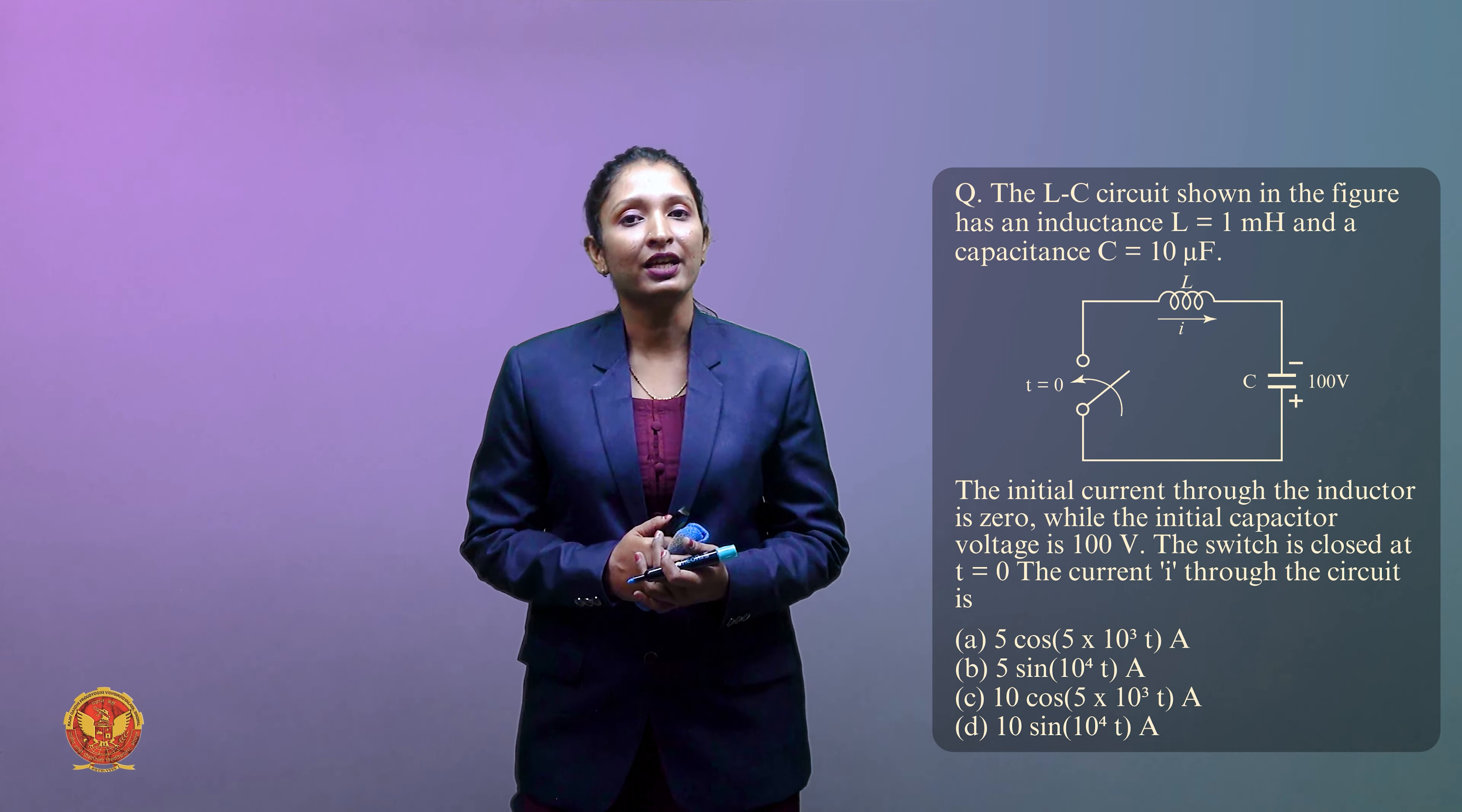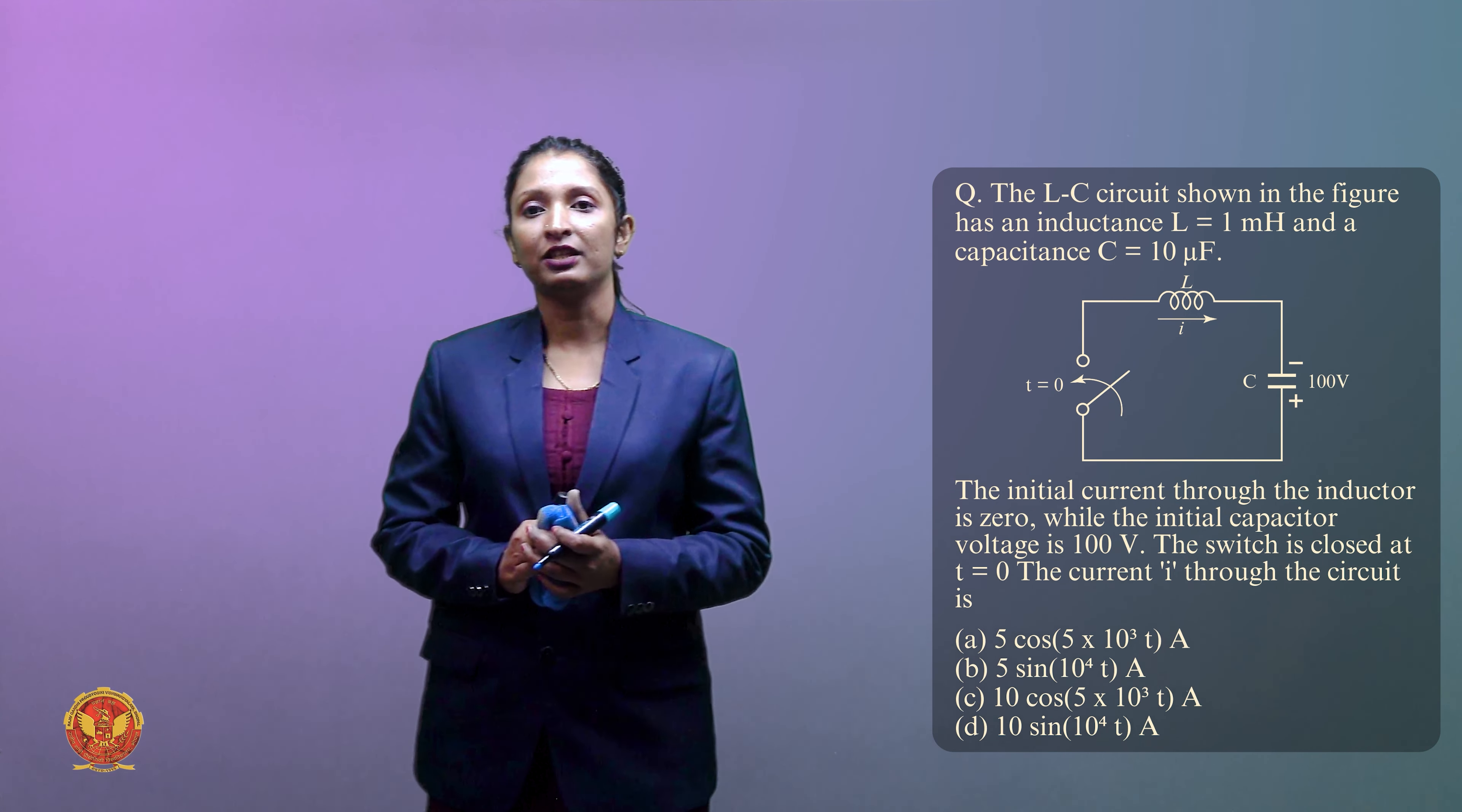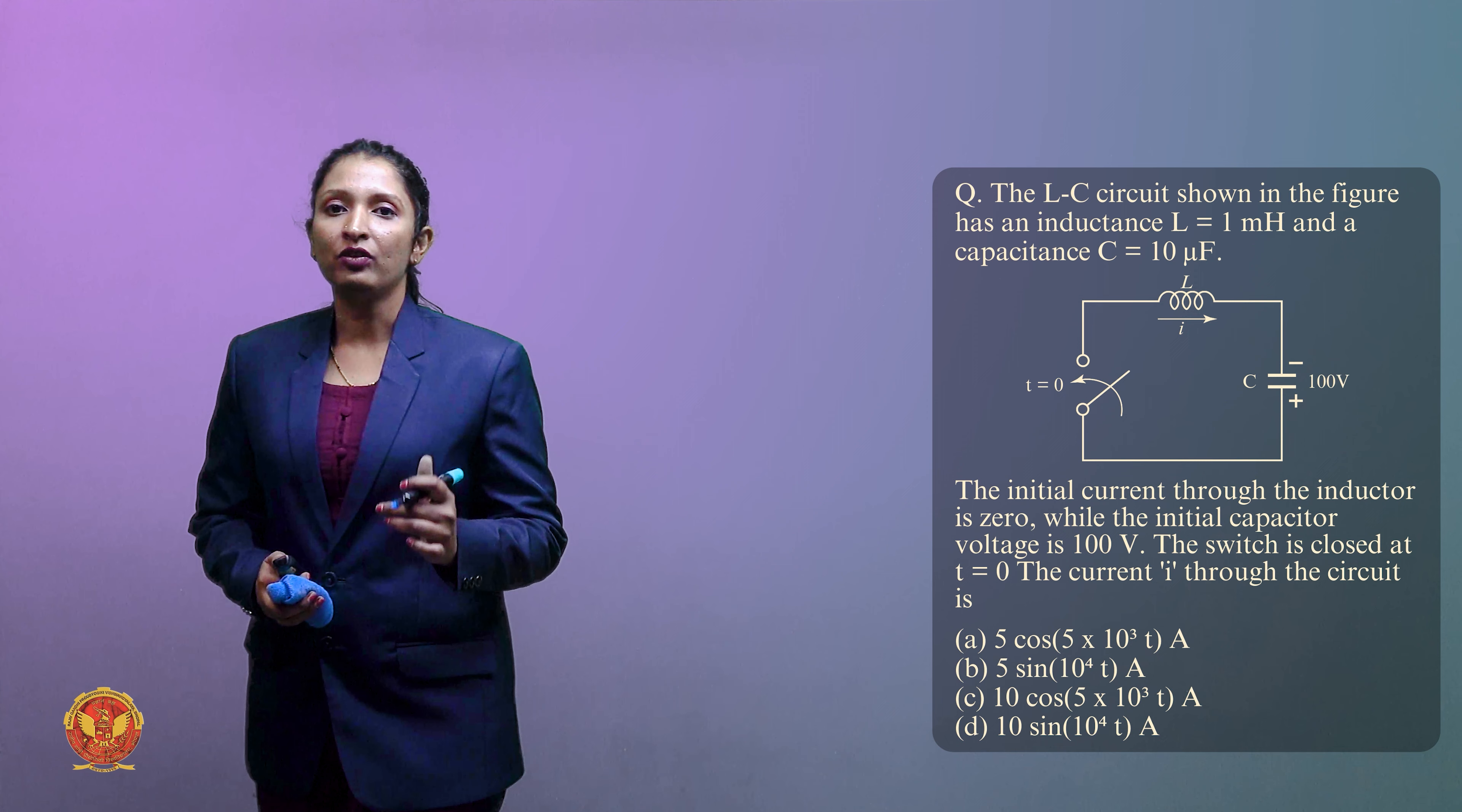The initial current is zero, the initial capacitor voltage is 100 volt. T equals to zero pe switch is closed at T equals to zero. So at that time we have to find I. Circuit me you have 4 options, you have to choose the right option. Let's redraw the circuit.